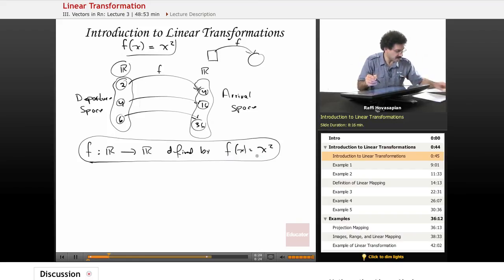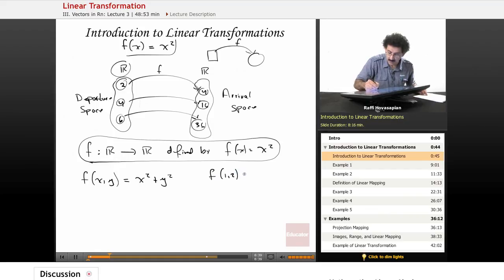Let's do another example. Let's say I have the function f of x, y. Now I have two variables. f is equal to x squared plus y squared. Let's just do a simple example. If I take the point 1, 2, it's x squared plus y squared. So 1 squared plus 2 squared is equal to 1 plus 4. That's equal to 5.